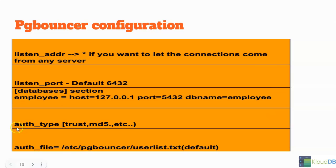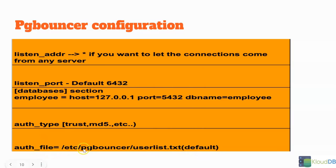Another important parameter is authentication type. If you're using MD5, you should give MD5 here. Trust is insecure, so if you're using MD5, specify it here. The authentication file is where you give the list of users and passwords — the passwords can be in an encrypted form. This is the default location of the authentication file, but you can change the location if you want.